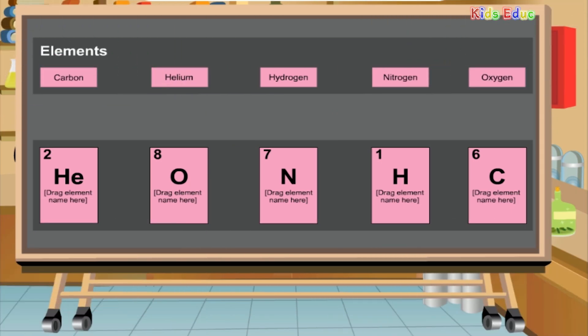Now that you know about the periodic table, elements, and element symbols, try matching element symbols to elements. Drag and drop the element name shown on the top — such as carbon, helium, hydrogen, nitrogen, or oxygen — to the element cards shown on the bottom. For example, drag helium to the element card on the left that contains the element symbol for helium. Good luck!